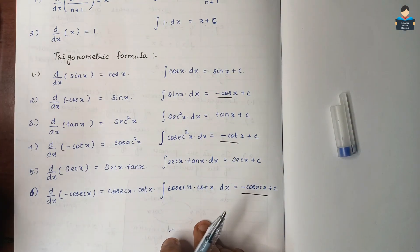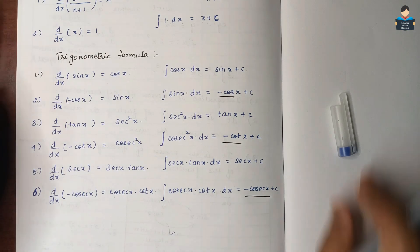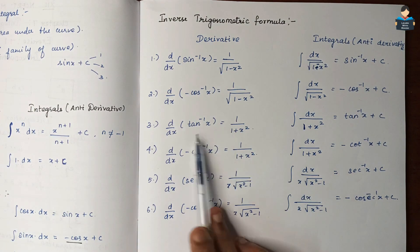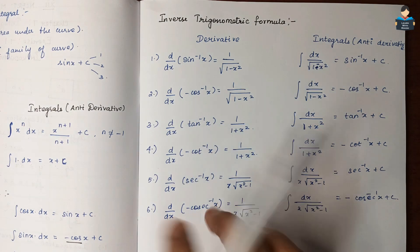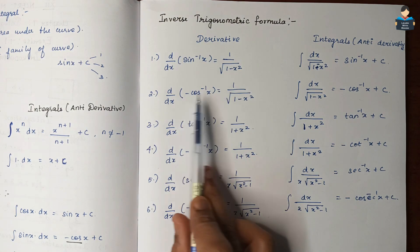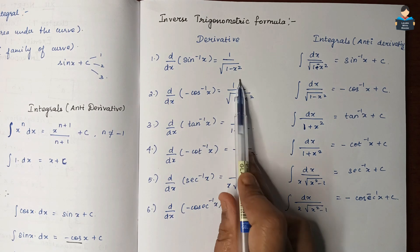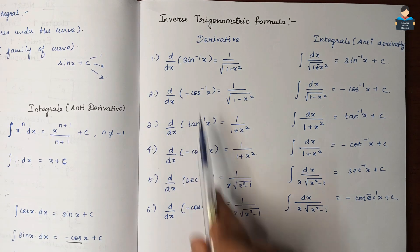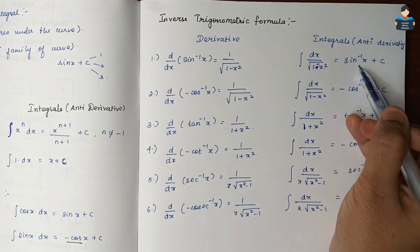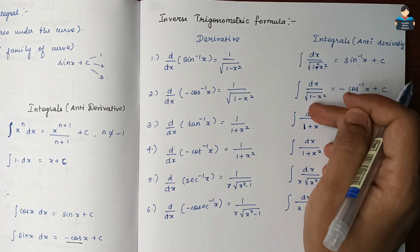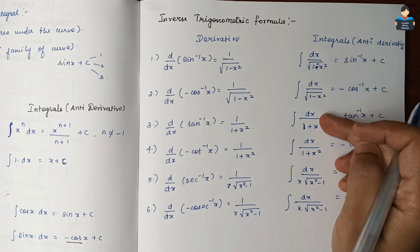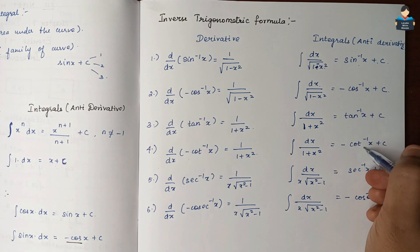Now let's look at inverse trigonometric formulas. In differentiation: the derivative of sin⁻¹x is 1 over √(1−x²), and the derivative of cos⁻¹x is minus 1 over √(1−x²). So the integral of dx over √(1−x²) equals sin⁻¹x plus C. Also, tan⁻¹x plus C and minus cot⁻¹x plus C.